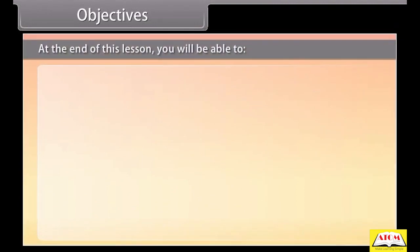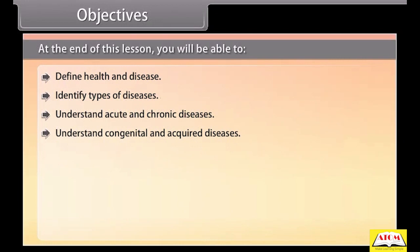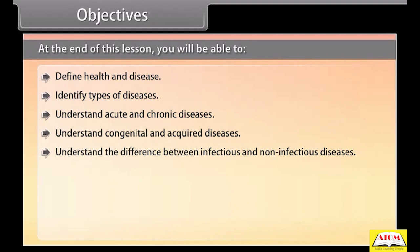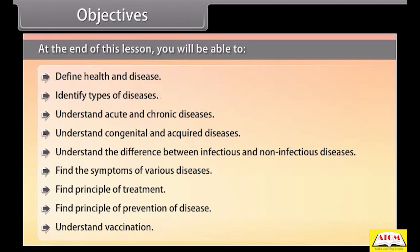At the end of this lesson, you will be able to: define health and disease, identify types of diseases, understand acute and chronic diseases, understand congenital and acquired diseases, understand the difference between infectious and non-infectious diseases, find the symptoms of various diseases, find the principle of treatment, find the principle of prevention of disease, and understand vaccination.